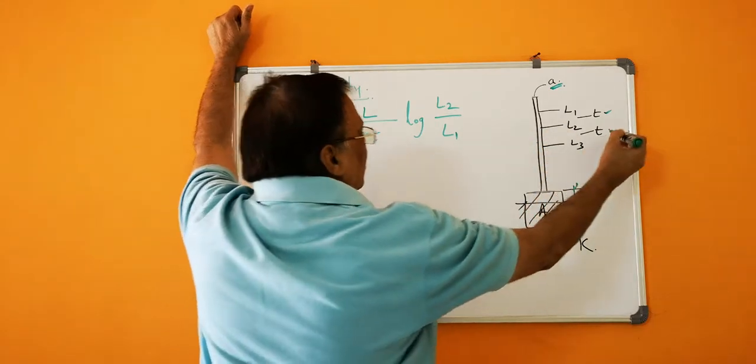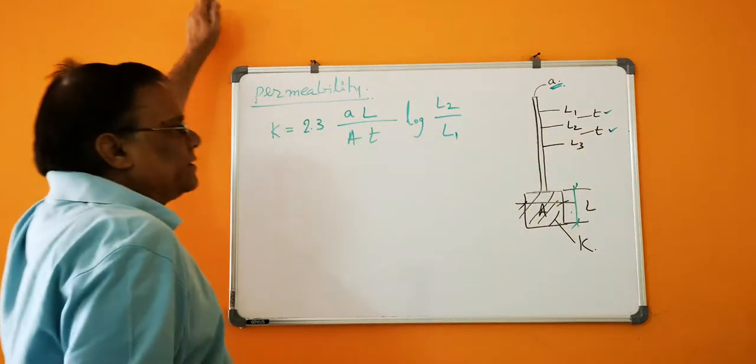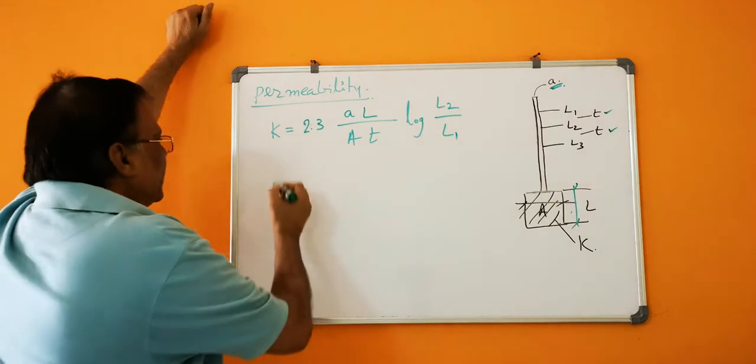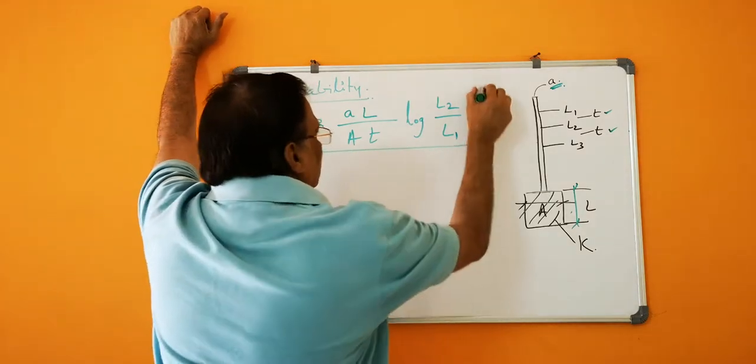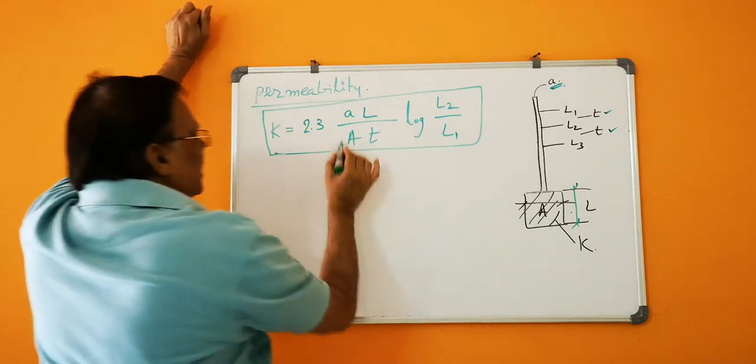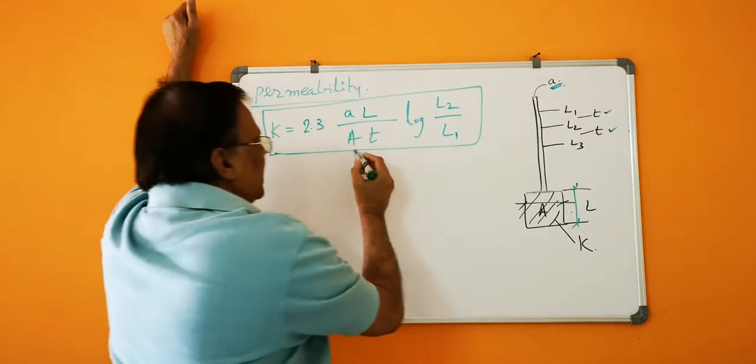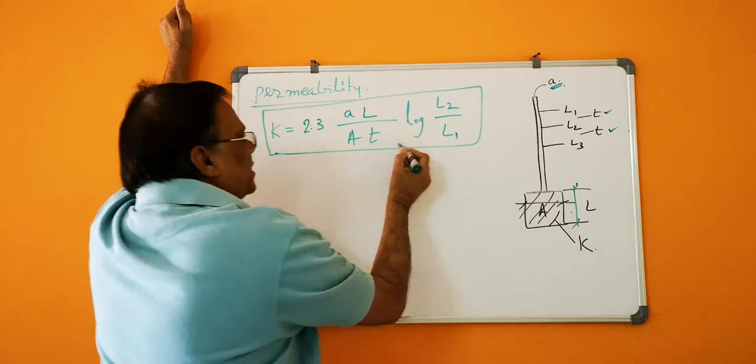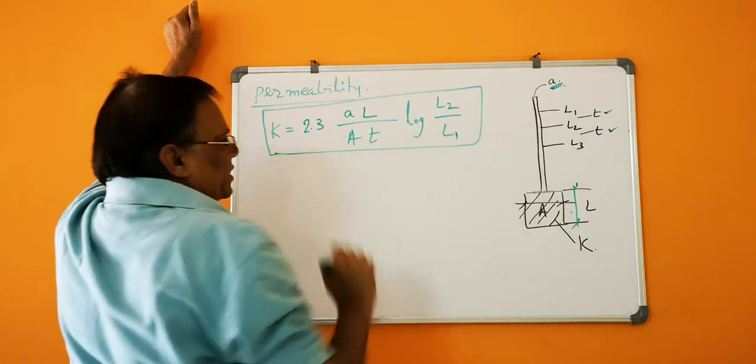And L2 to L3 also in time T. Then the permeability K is given by: 2.3 times small a times L divided by capital A times T, multiplied by log of L2 by L1. This is given.